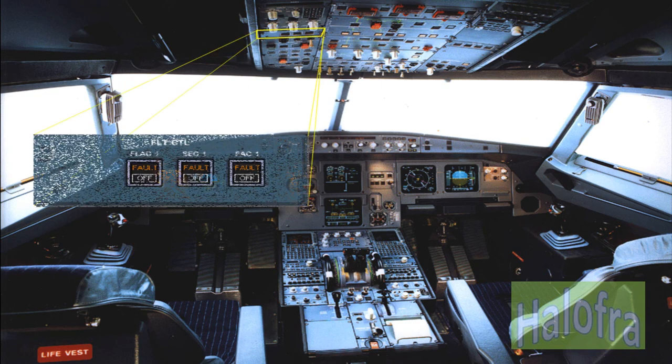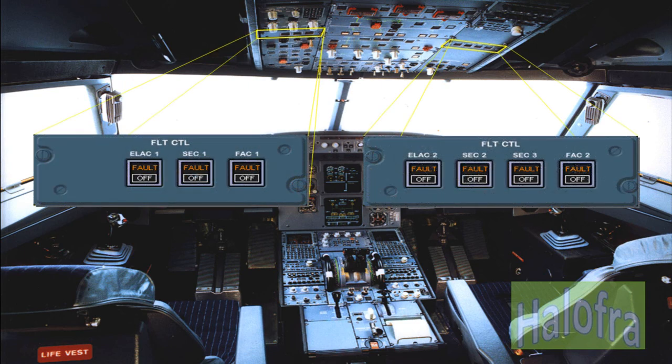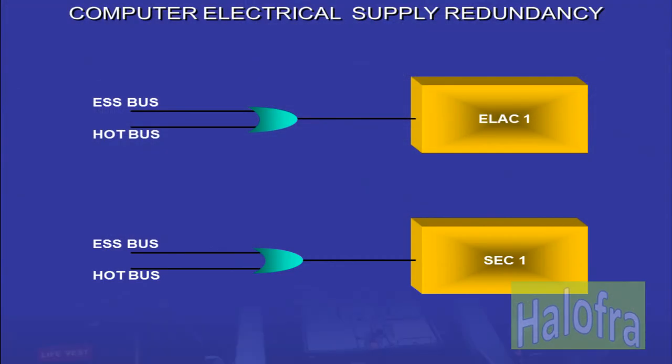In addition, there are two panels located on the overhead panel to control the flight control computers. Switching off then on resets the corresponding computer. The ELAC-1 and SEC-1 are normally supplied by the essential bus, but can be supplied by the hot bus in case of electrical failure.